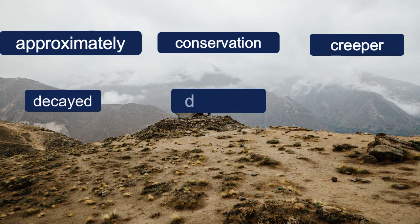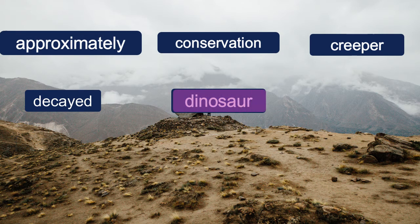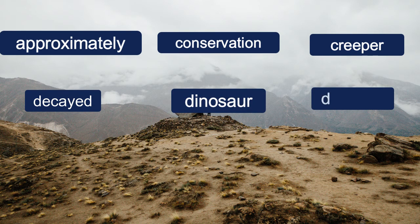D, I, N, O, S, A, U, R — Dinosaur. D, R, A, I, N, A, G, E — Drainage.